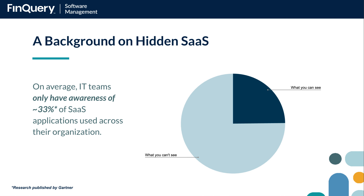Let's start with a quick background on hidden SaaS or shadow IT within an organization. These are all of the unsanctioned applications that may still be in use by end users within your business. When we think about how business is run today, most organizations are relying on well over 100 different SaaS applications to perform job duties. And when we think about managing SaaS applications from an IT perspective, what we find through research is that only about one third of applications are truly accounted for and managed by IT centrally. That means a significant amount of applications in use across your business are either managed by end users themselves, by different department heads, and may not be following the proper policies or standards that are being set by your IT and security teams.